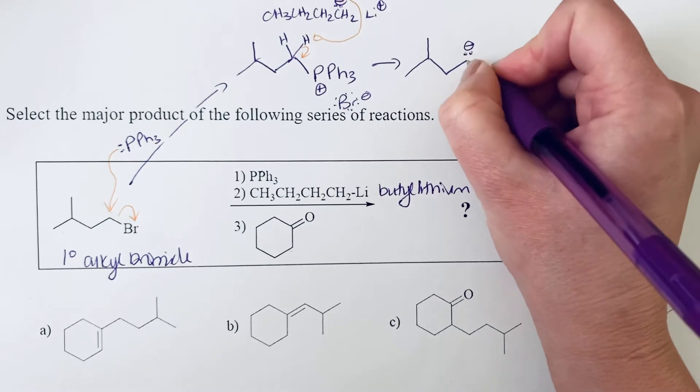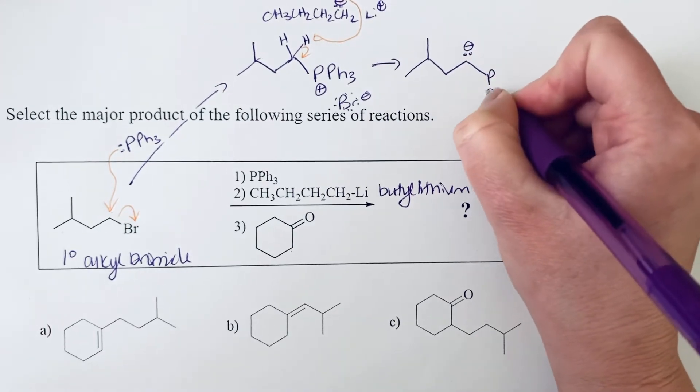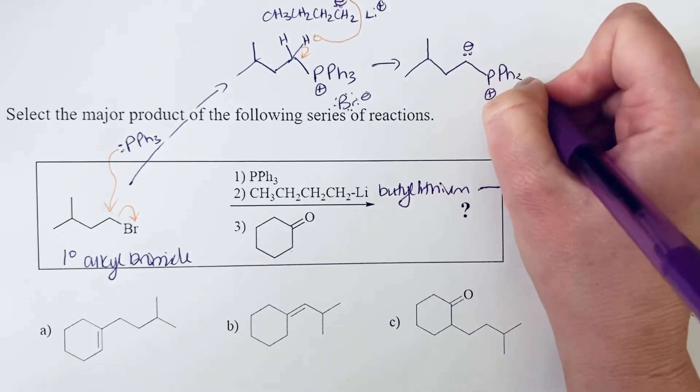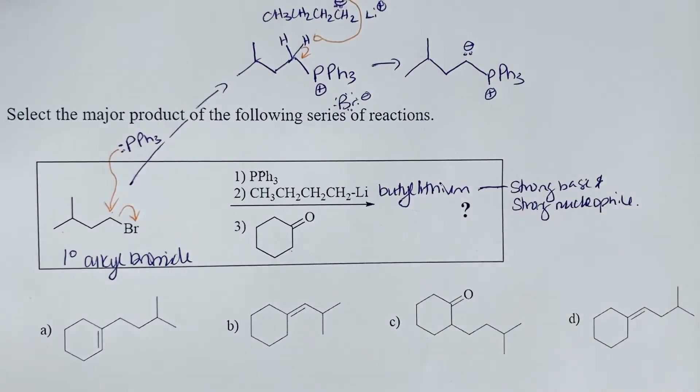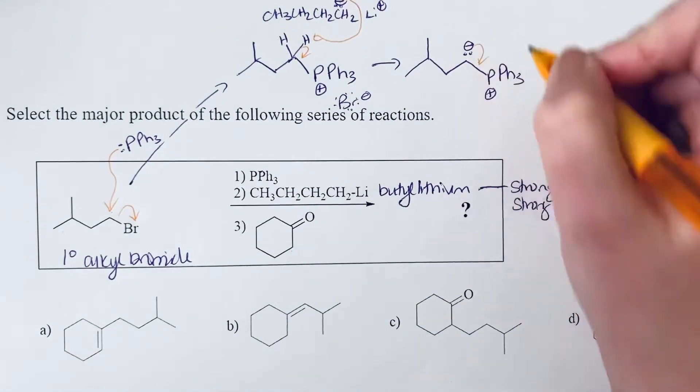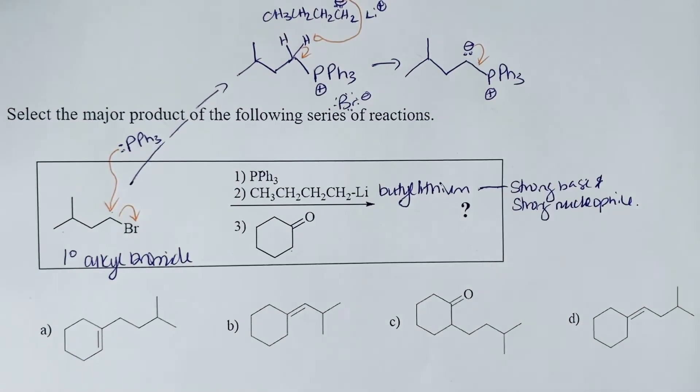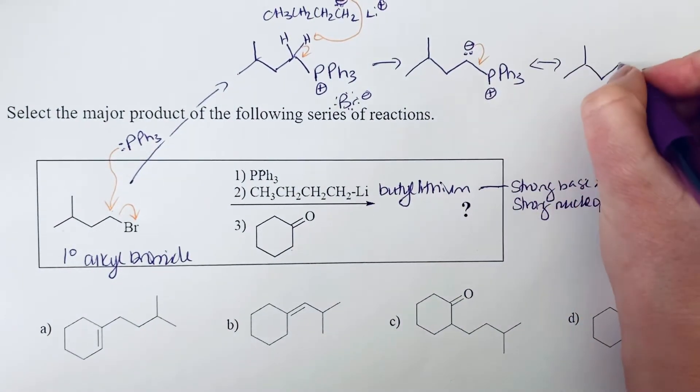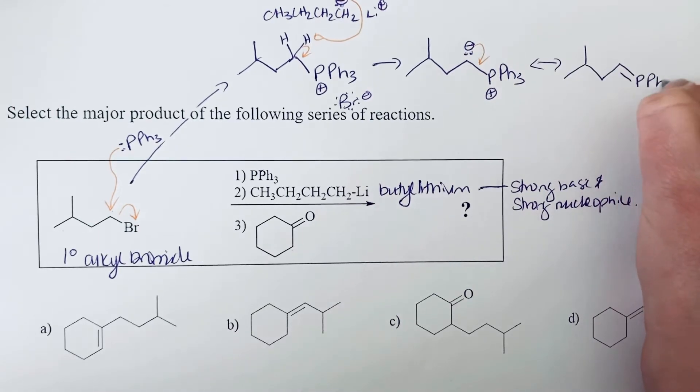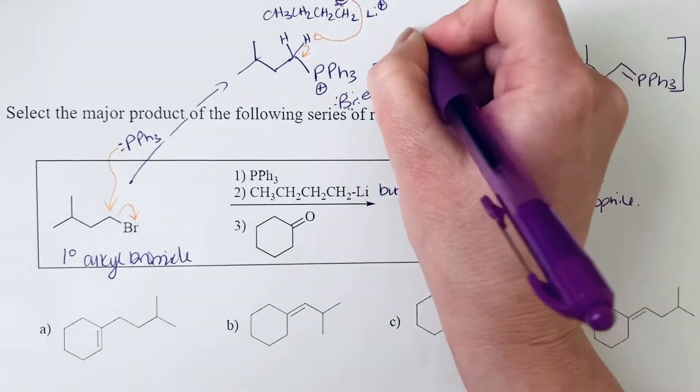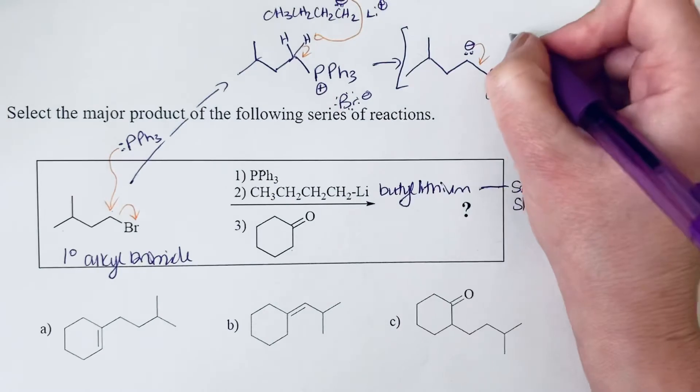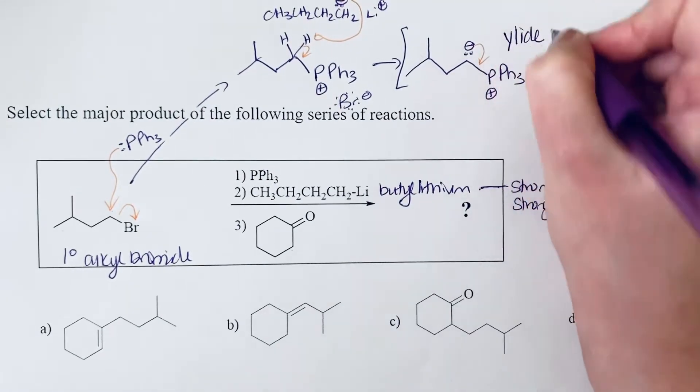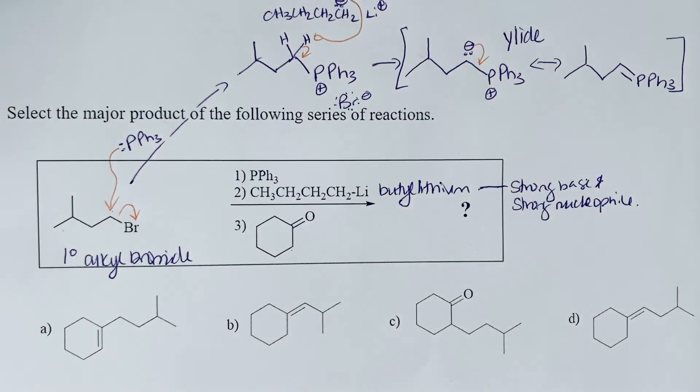It's a negative charge on the carbon and we still have a positive charge on that phosphorus. This ylide has a resonant structure. We could also draw this in its resonance form where we see the double bond between the carbon and phosphorus. This structure is known as an ylide.